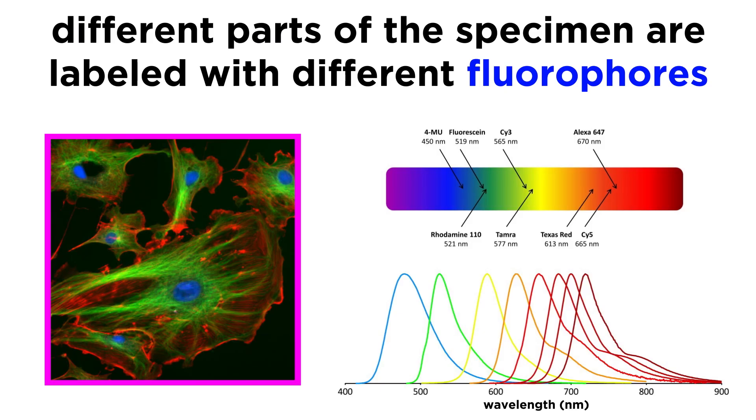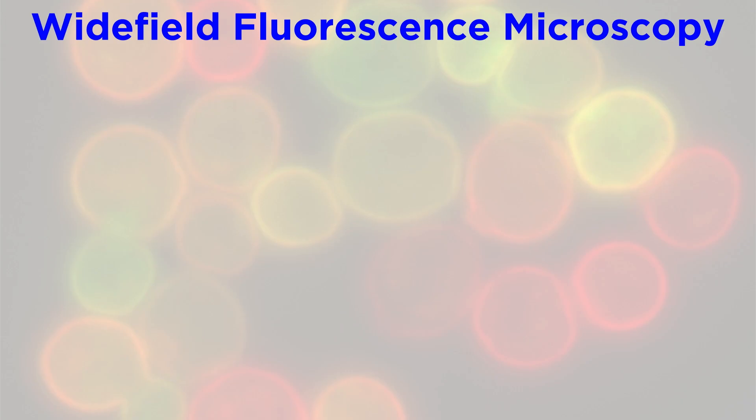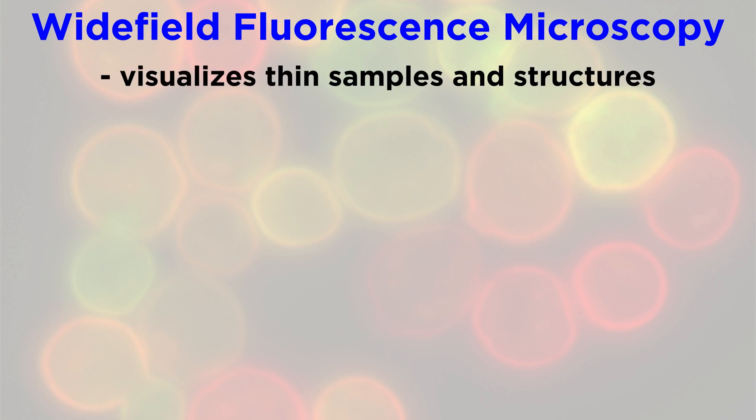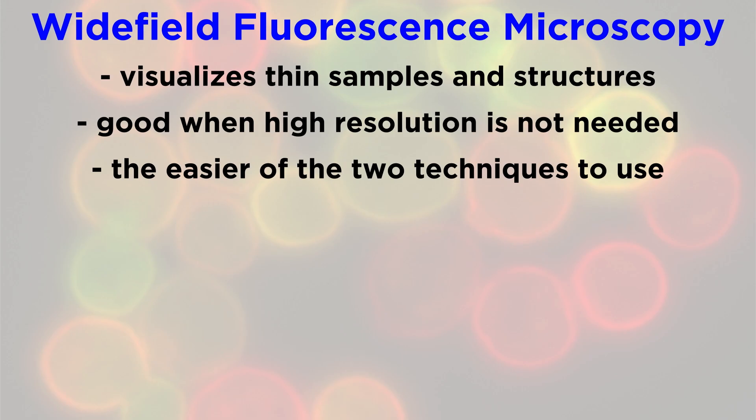In fluorescence microscopy, specific structures are labeled with certain fluorescent molecules called fluorophores, so that they can be differentiated in the imaging process. Wide-field fluorescence microscopy is a standard form of fluorescence microscopy that is used to visualize thin samples and structures that do not need to be viewed with high levels of resolution.